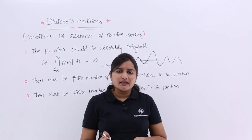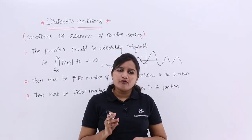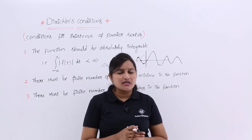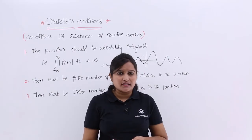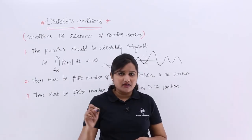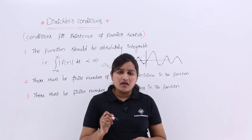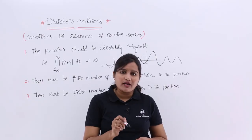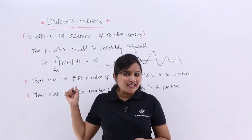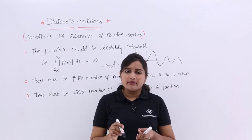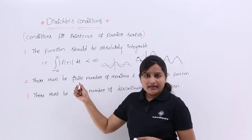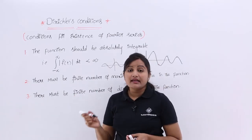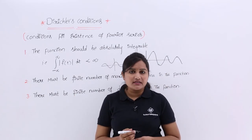In total, we have three important conditions to obtain a Fourier series representation, or a Fourier transform and Laplace transform representation, for any signal. If you want to represent any signal using Fourier series, or convert it to the frequency domain using Fourier or Laplace transform, the signal must satisfy: (1) it must be absolutely integrable, (2) there must be a finite number of maxima and minima, and (3) there must be a finite number of discontinuities. Only then can we represent the signal in Fourier series or apply transforms.